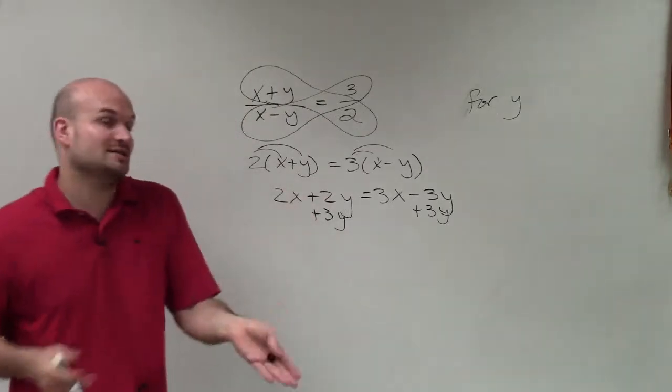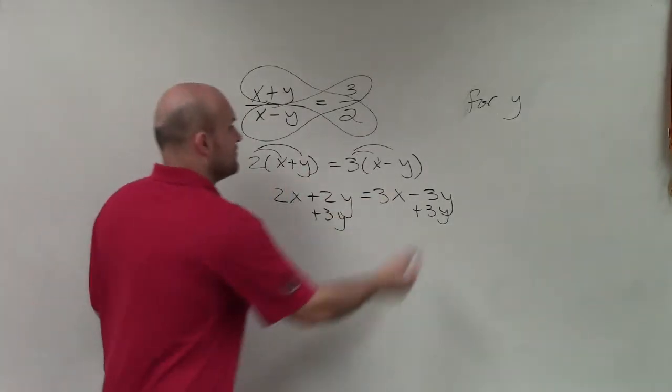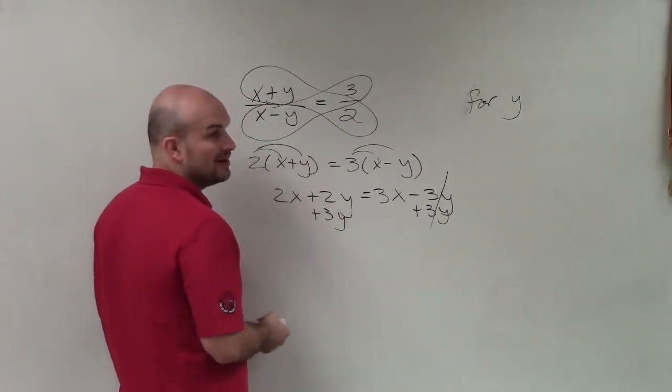Now, again, there's nothing wrong with subtracting 2y to get the y on the right side. I personally just like to keep them positive. So now that's going to combine to 0, and this is going to be combined to 5y. So now I have 2x plus 5y equals 3x.